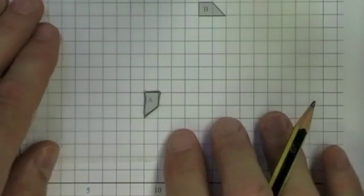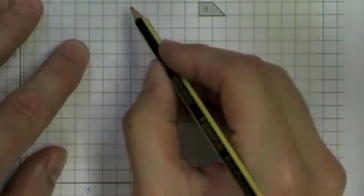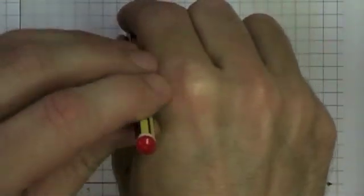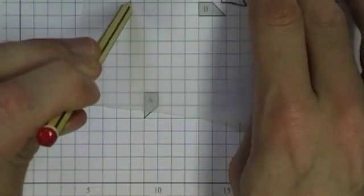So tracing paper with the shape A traced. Let's try this point up here. If I push my pencil there and rotate, it doesn't fit onto B.